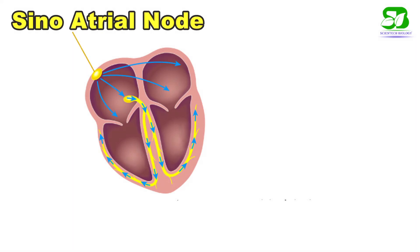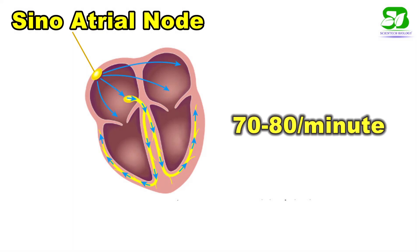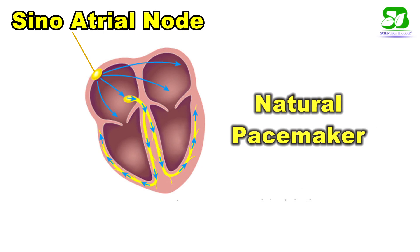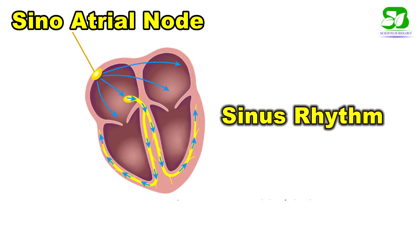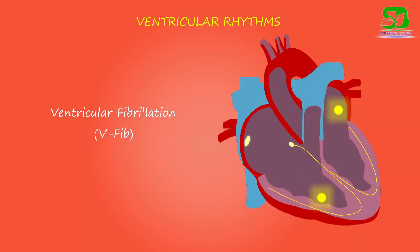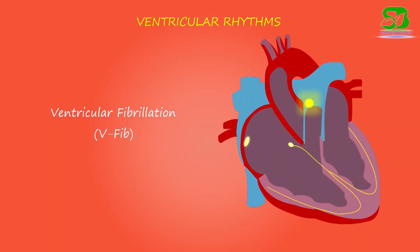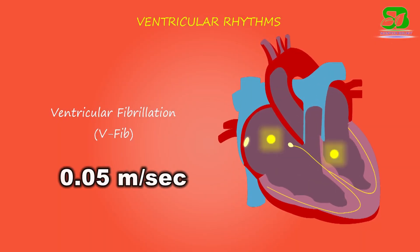The SA node generates impulses at the rate of 70 to 80 per minute in adults and acts as the pacemaker of the heart. The rhythm originating from this region is generally designated as sinus rhythm. The speed of conduction of impulse at the SA node is about 0.05 meters per second.